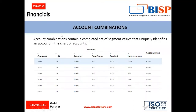First, we'll understand what account combinations are. Account combinations contain a complete set of segment values that uniquely identifies an account in a chart of accounts. So when we record the transactions, we'll have to mention all these segments and their values to uniquely identify an account.